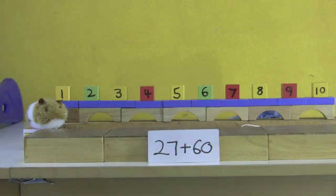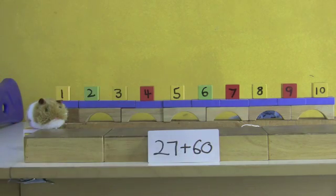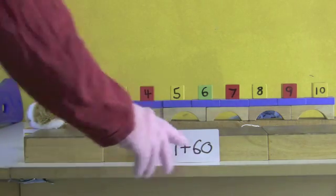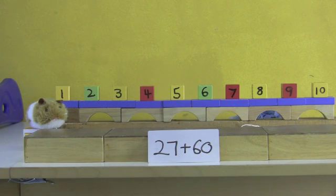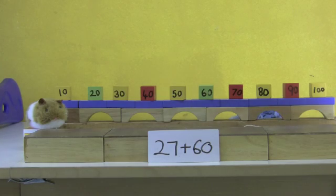The first numbers I'm going to add are 27 and 60. But if I look at my number line, it only goes up to the number 10. So what I'm going to do is use my number line to count in tens, because I have six tens. 27 plus six tens. So let's see how that would work. I'm going to add on six tens.